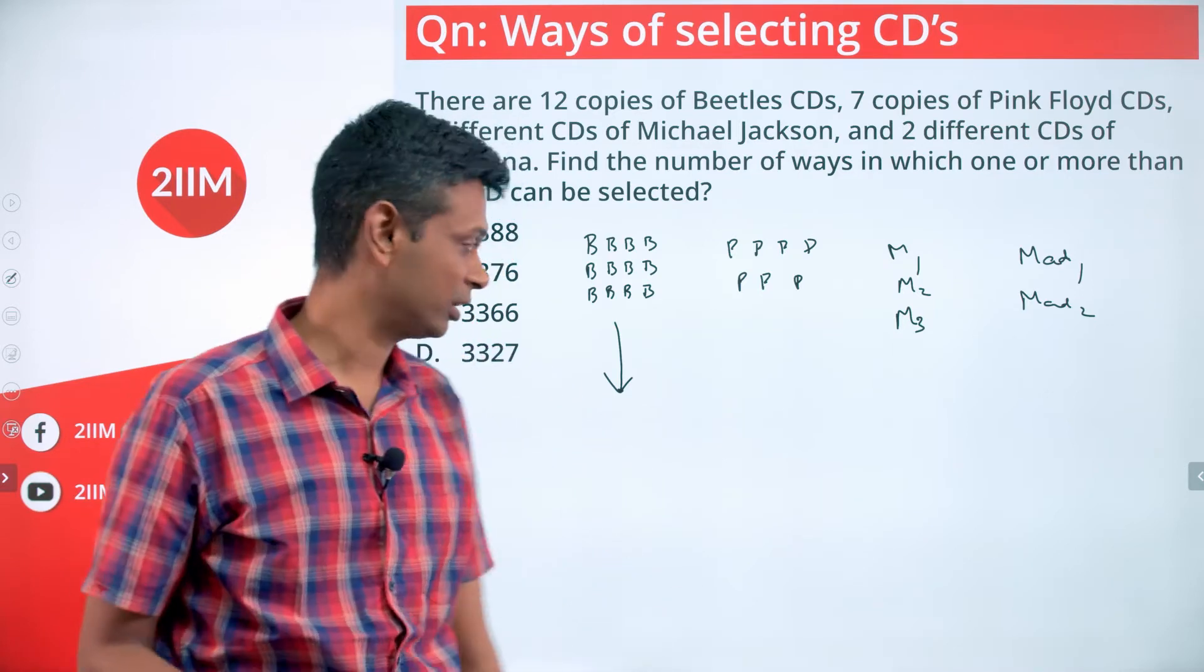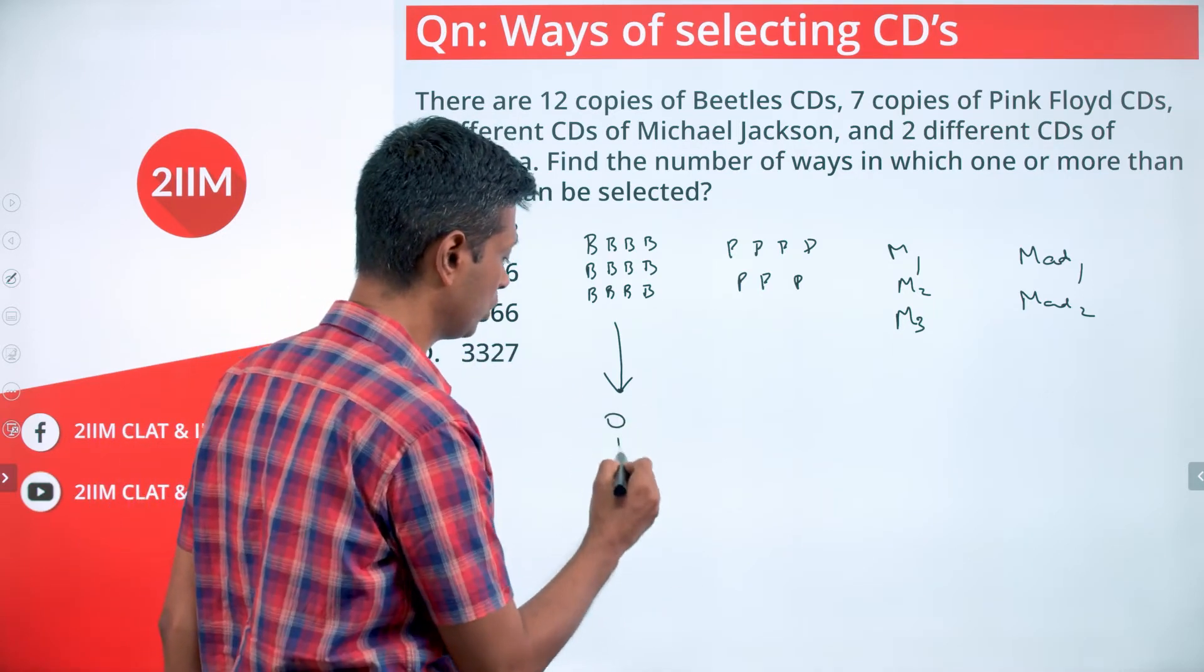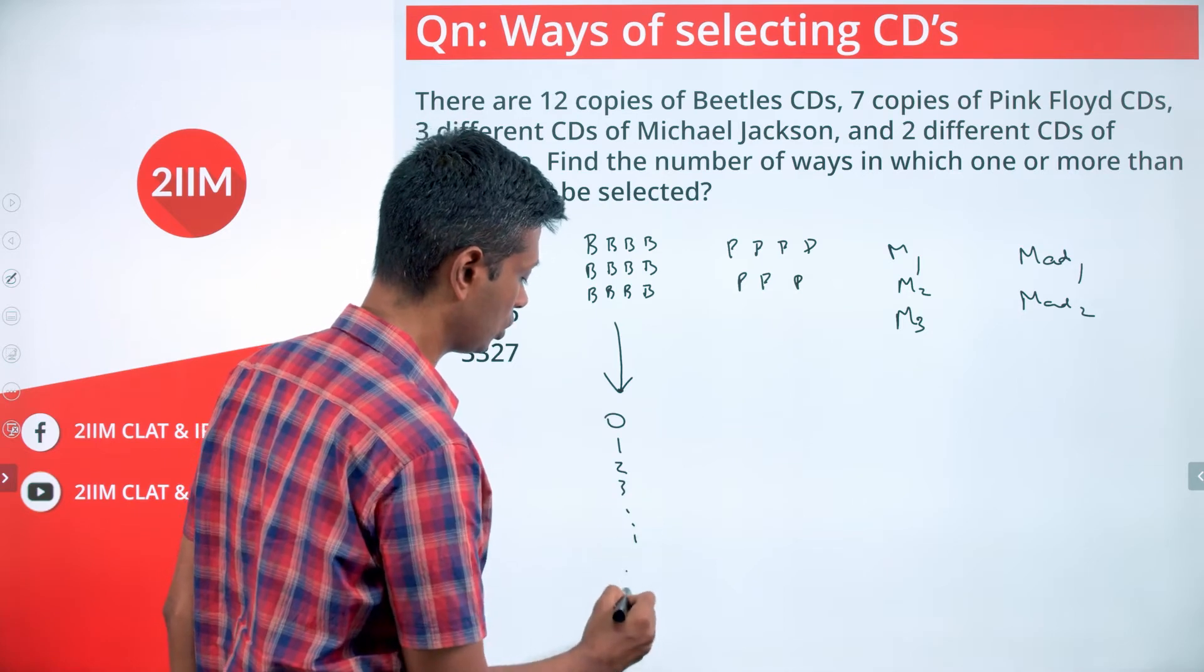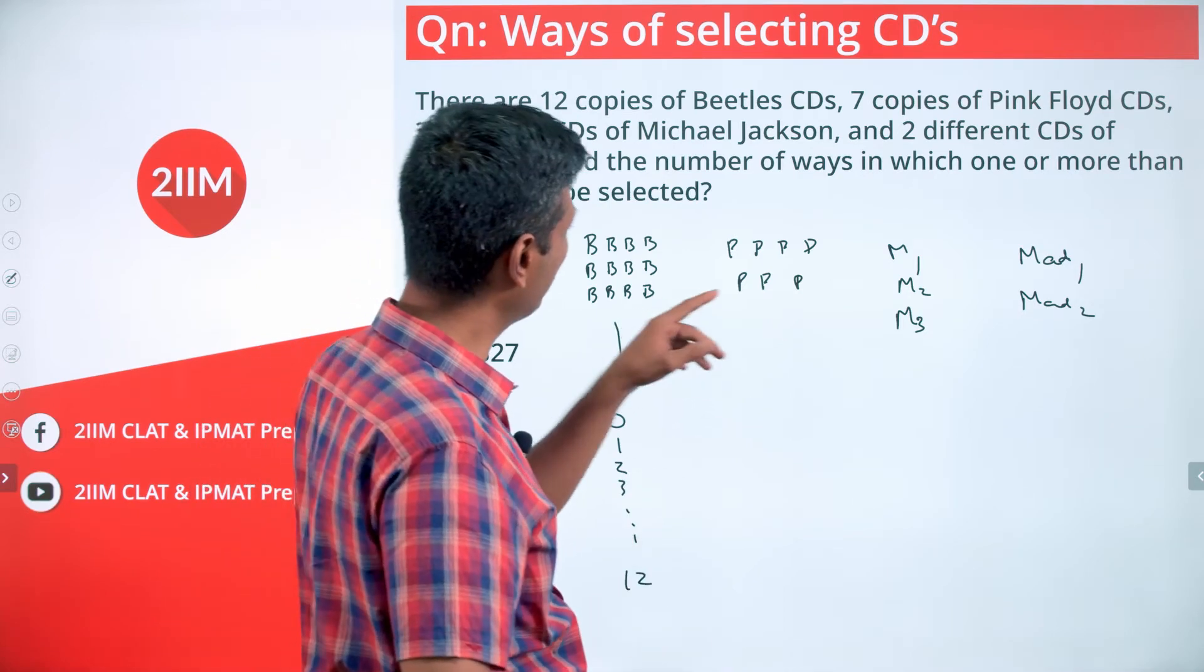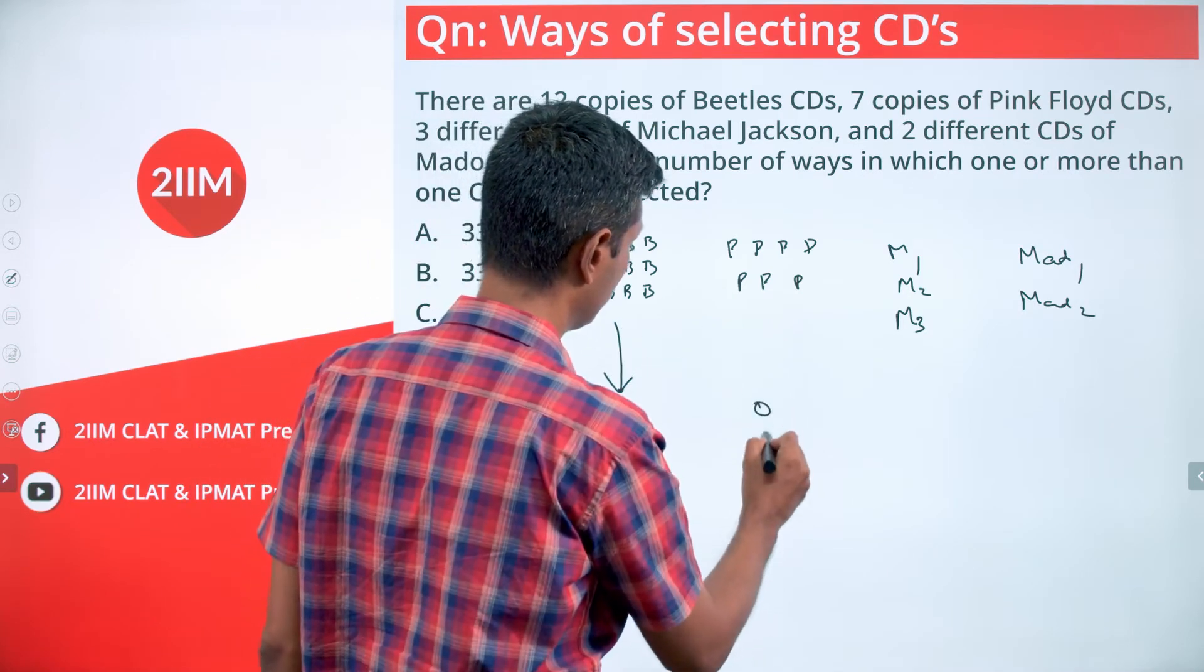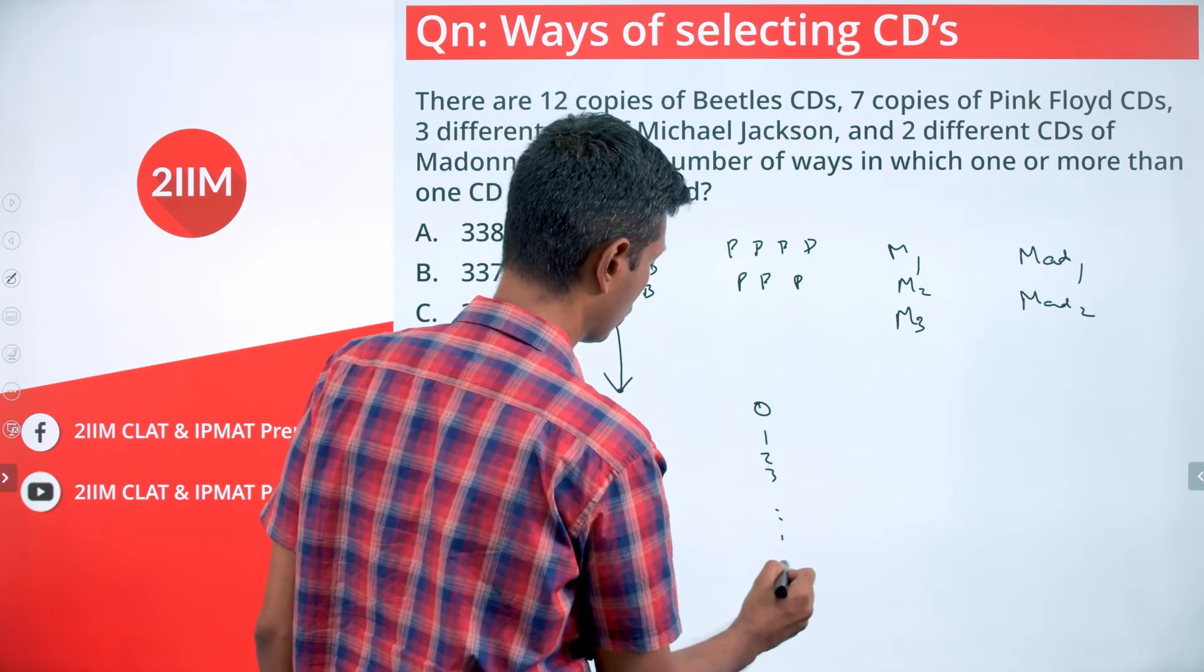As far as the Beatles CDs are concerned, I can select 0, 1, 2, 3, or all 12 of them. As far as the Pink Floyd CDs are concerned, I can select 0, 1, 2, 3, or all seven of them.